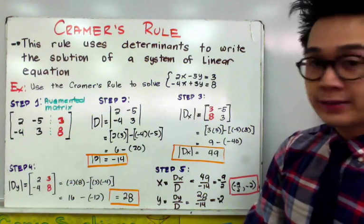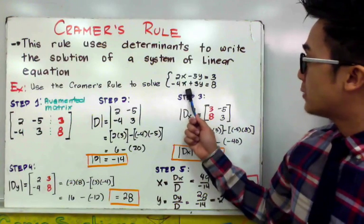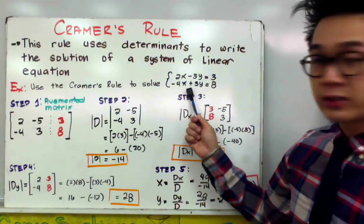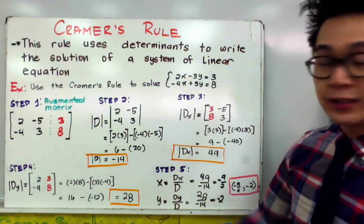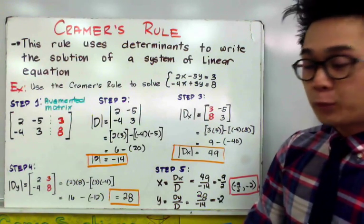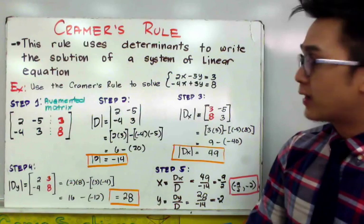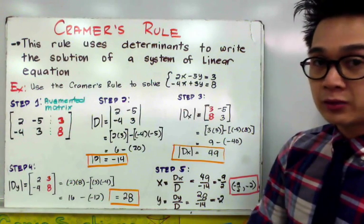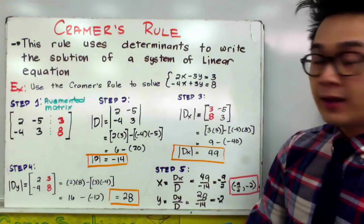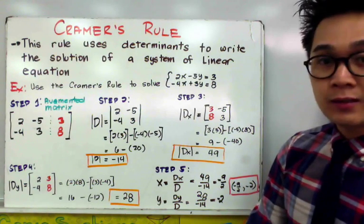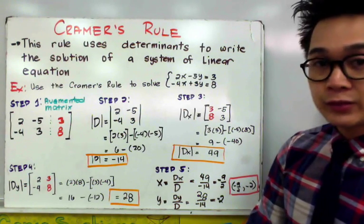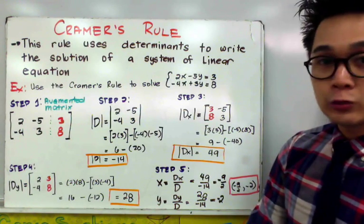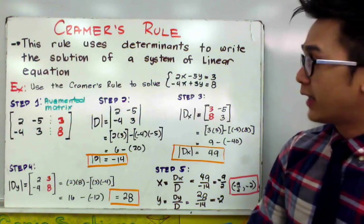In our first example, we have 2x minus 5y equals 3 and negative 4x plus 3y equals 8, which is a linear system. In previous algebra lessons, we know that to find the solution of a linear system, we can use the elimination method, the substitution method, and the graphing method. But this time, we're going to use matrices as an alternative way to find the solutions.